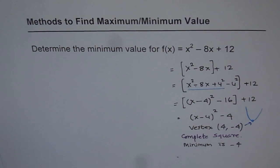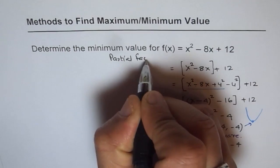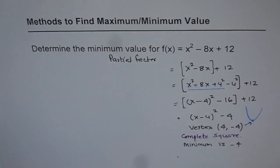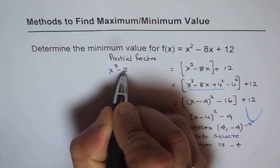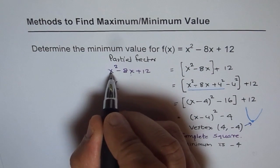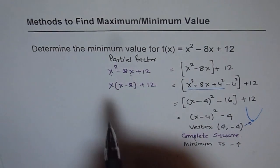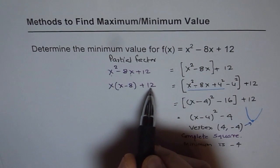Now let's look into another method called partial factoring. In partial factoring, we do not factor the whole term — we just factor the first two terms. Given the trinomial f(x) equals x squared minus 8x plus 12, I can factor just the first two terms and write this as x times (x minus 8), plus 12. This means that at two points where x equals 0 or x equals 8, the value of the function is 12.